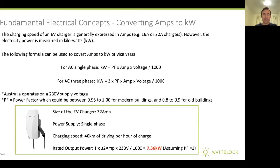Another concept to cover is converting amps to kilowatts. The charging speed of an EV charger is generally expressed in amps — for example, 16 amps or 32 amps. However, electrical power is measured in kilowatts. A lot of the time, you'll hear people speaking in both of these terms, and here are the equations that allow you to convert from amps to kilowatts or vice versa.